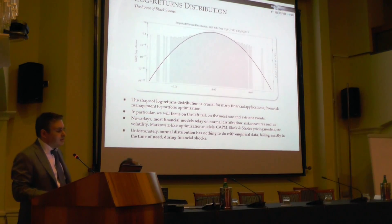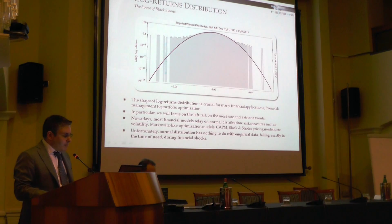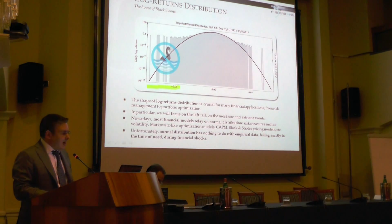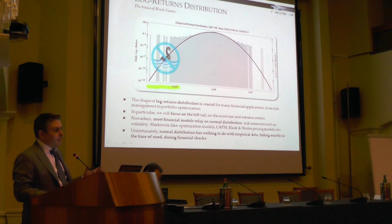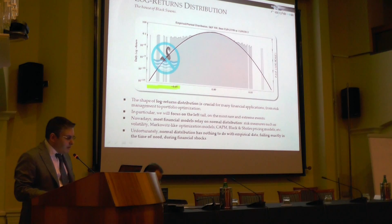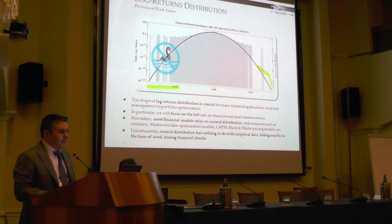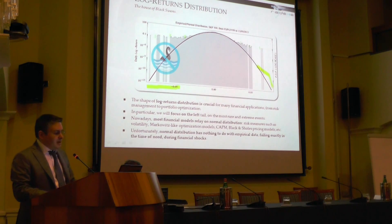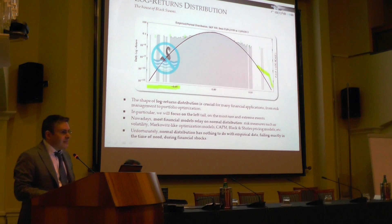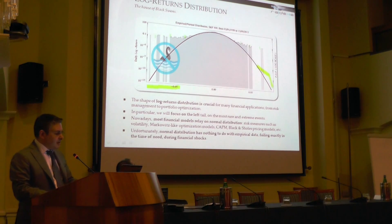As you know, while the returns distribution is important for many financial applications, above all we are interested in the left tail — the so-called infamous black swans, the extreme and most dangerous events that might compromise an investment forever. Nowadays, the most diffuse financial models are still based on normal statistics. Unfortunately, the normal distribution has nothing to do with empirical data, and is not able to take into account shocks and bubbles.